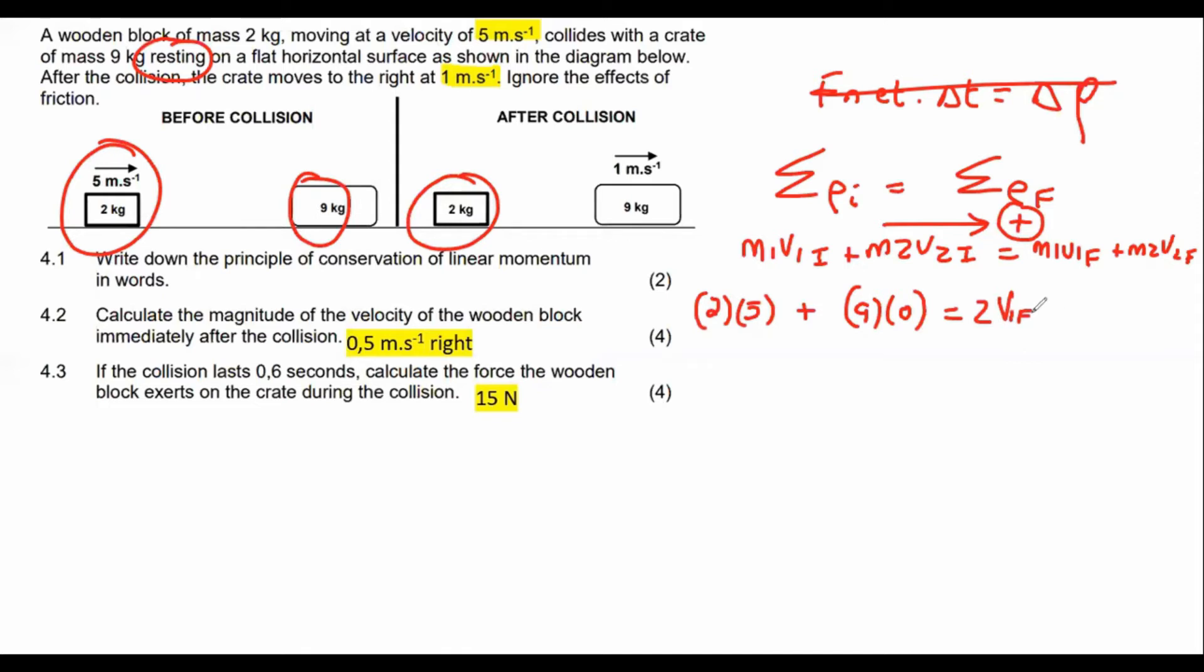We don't know what its velocity is, but we do know that the other block is going to move off at one meters per second. And there we go, guys. Can it be any easier? And then we're just going to solve for velocity. And so if you had to go do all the calculations, you should find out that the final velocity is going to be 0.5 meters per second.